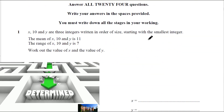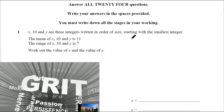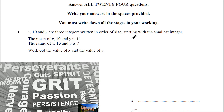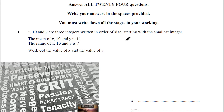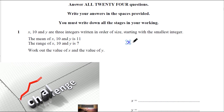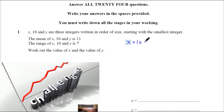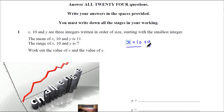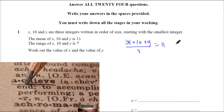We have three integers. The smallest must be X, then 10, and then Y. So the mean of these three is 11. We should know that X plus 10 plus Y divided by 3 equals 11, because that's how we get the mean — all the numbers added together divided by the number of numbers.